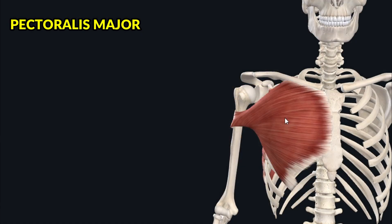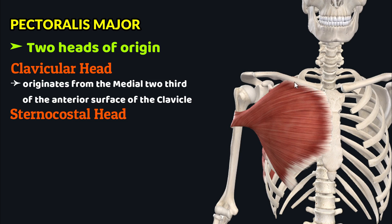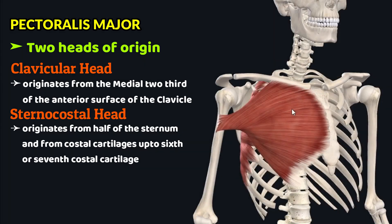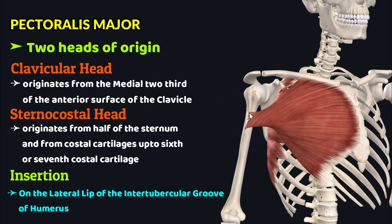The pectoralis major muscle has two heads of origin: a clavicular head and a sternocostal head. The clavicular head originates at the anterior surface of the medial two-thirds of the clavicle, while the sternocostal head originates at the anterior surface of the sternum and from the costal cartilages up to the sixth or seventh costal cartilage. This muscle then inserts through a single tendon on the lateral lip of the intertubercular groove of the humerus.